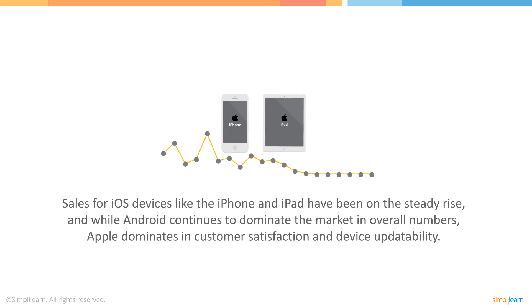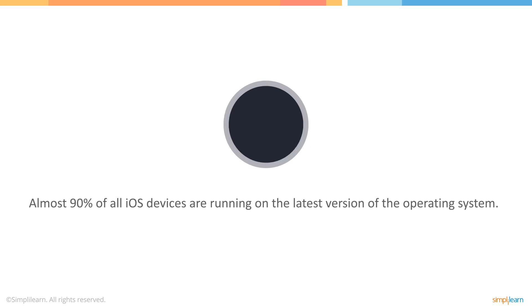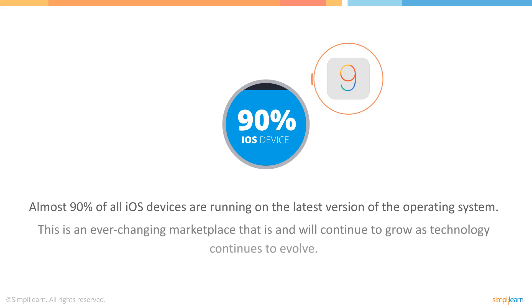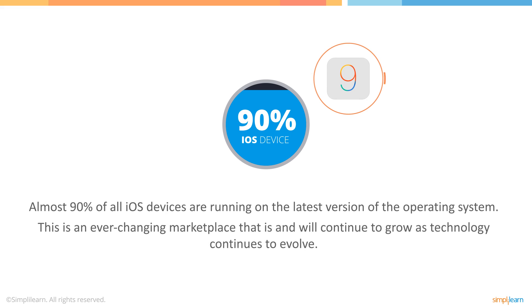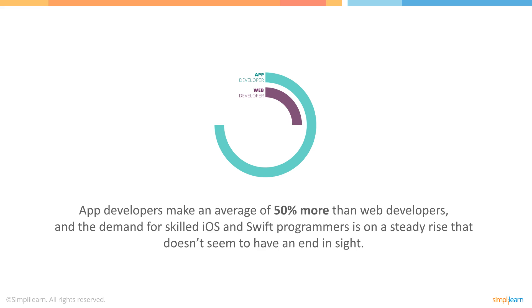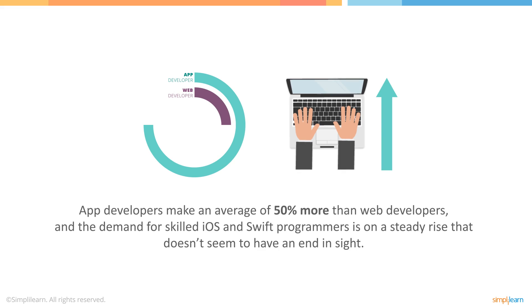Sales for iOS devices like the iPhone and iPad have been on the steady rise, and while Android continues to dominate the market in overall numbers, Apple dominates in customer satisfaction and device updatability. Almost 90% of all iOS devices are running on the latest version of the operating system. App developers make an average of 50% more than web developers, and the demand for skilled iOS and Swift programmers is on a steady rise that doesn't seem to have an end in sight.